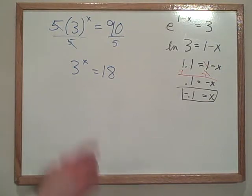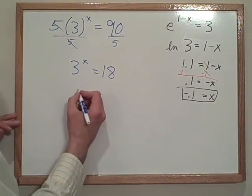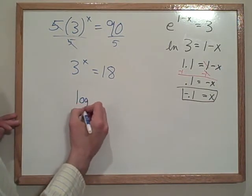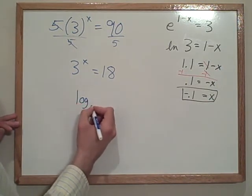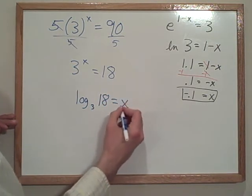x, okay? This is exponential. Because it is exponential, there's a variable in the exponent, we're going to write it as a logarithm. Log base 3 of 18 is equal to x. And we'll find out what that is in the calculator.